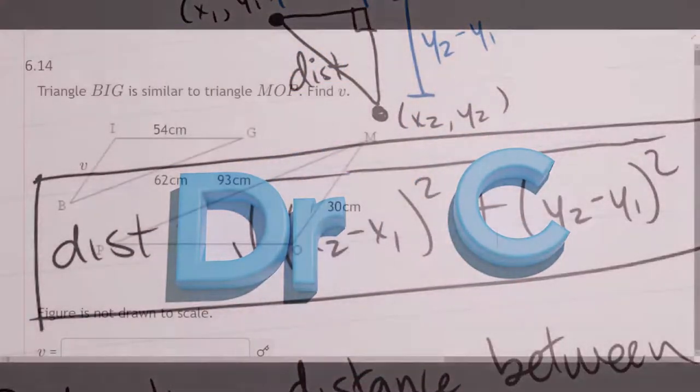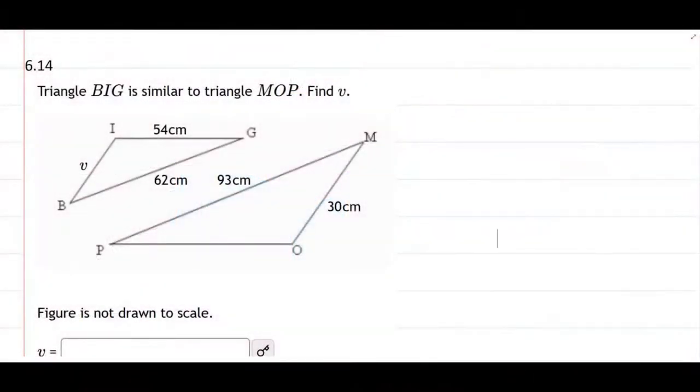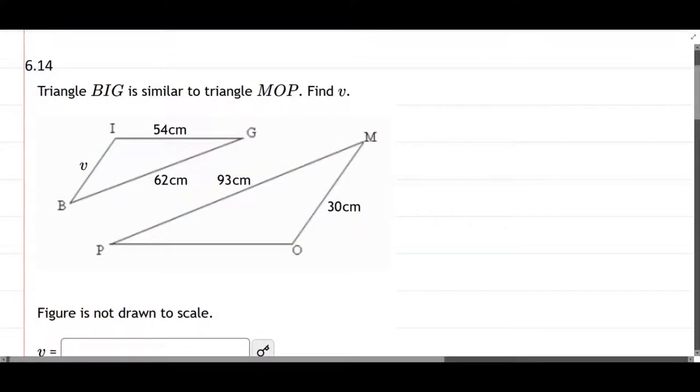We have two similar triangles, B-I-G and M-O-P. We have two sides on big, and we have two sides on mop that have measures. And what we're supposed to do is figure out side V right here.